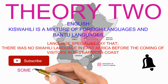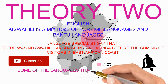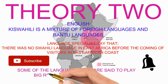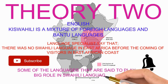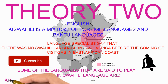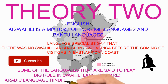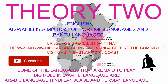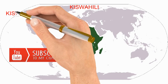They also say that Kiswahili is a mixture of languages from Asia. We talk about three big languages that have a big role in Kiswahili: Arabic language, Hindi language, and the Persian language. Those are the three languages said to play a big role in Kiswahili, along with the African Bantu languages.